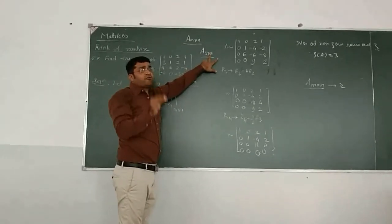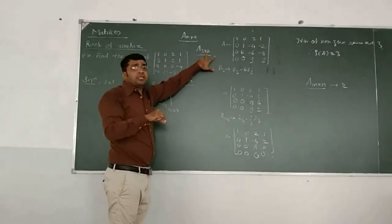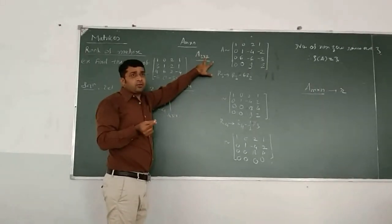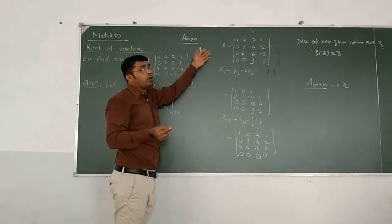So rank of the matrix will be 2, 1, or maybe 0. But 0 has possibility only when we have a null matrix. Otherwise, the rank will be 2 or 1.